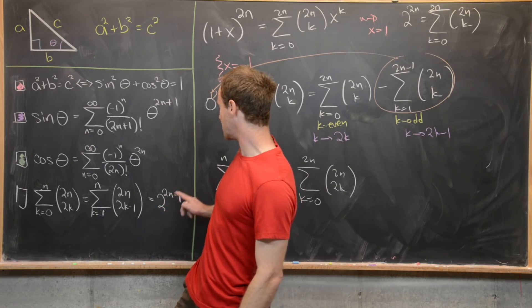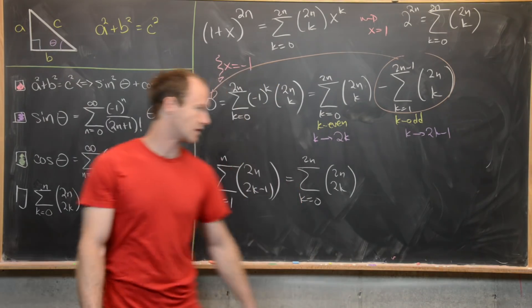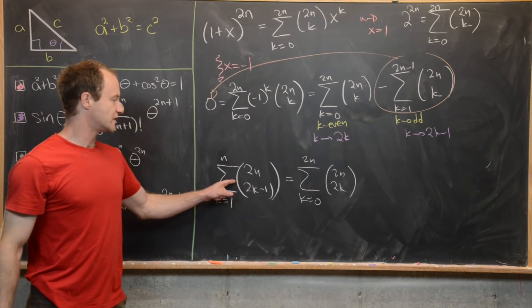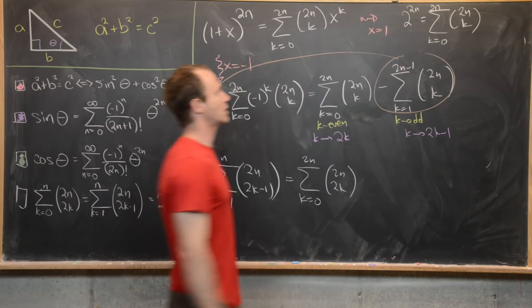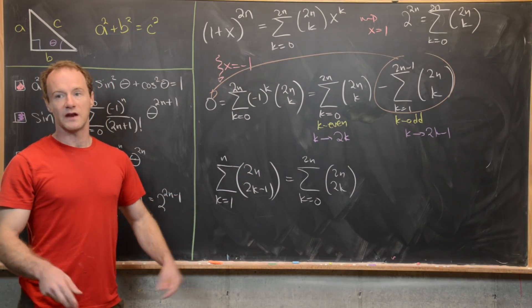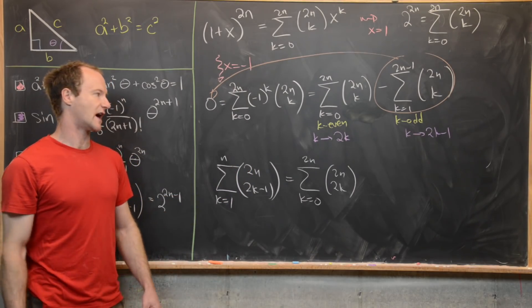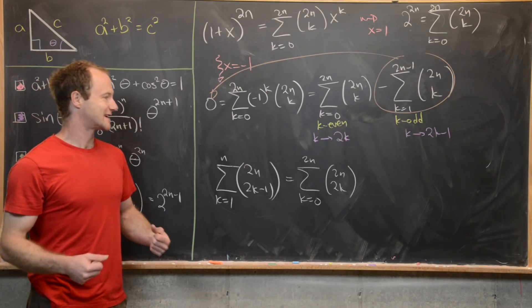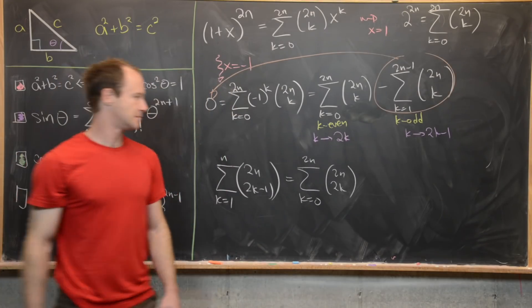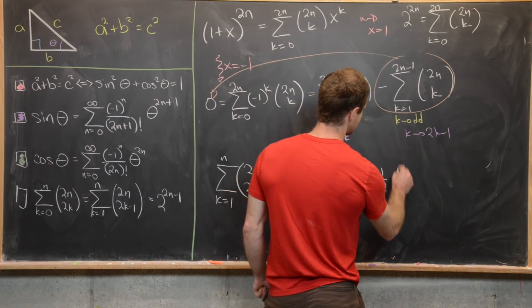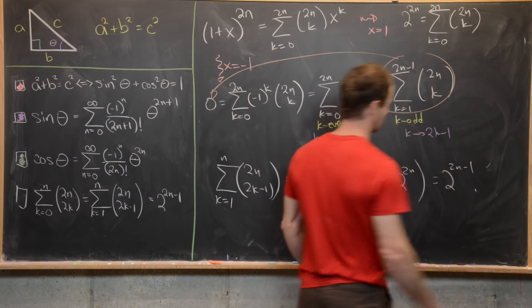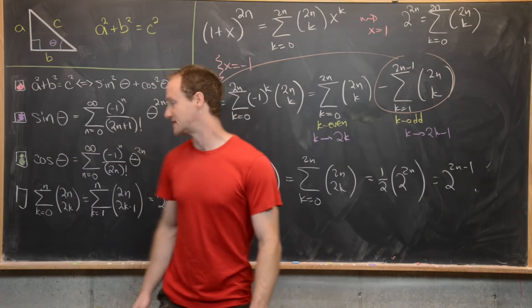We still need to show the value of these sums equals two to the two n minus one. Since the two equal sums add up to two to the two n (from our earlier substitution), each one individually must equal half of that, which is two to the two n minus one. That's exactly what we needed.